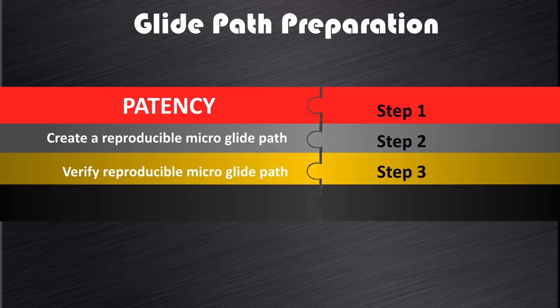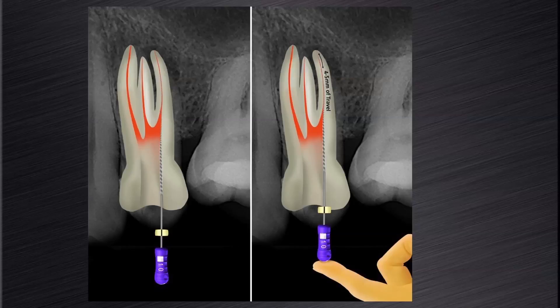The third step in glide path preparation is to check if we have indeed created a reproducible micro glide path with these small hand instruments. To confirm this step, it is advisable to take a 10 K file to full working length or patency, withdraw it for about 4 to 5 millimeters from working length, and then you must be able to push it back to working length with light finger pressure without any obstruction in its path of travel towards patency. This verification process will confirm the creation of a reproducible micro glide path.